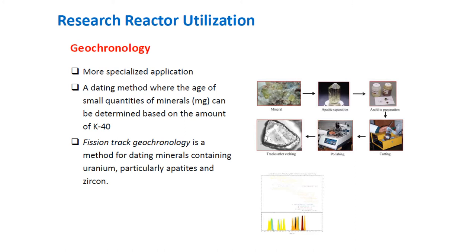The use of research reactors for geochronology is a more specialized application. There is a tendency towards loyalty to reactor facilities currently utilizing geochronological equipment, owing to lengthy facility calibrations. It is a dating method where the age of small quantities of minerals in milligrams can be determined based on the amount of K-40. Fission track geochronology is a method for dating minerals containing uranium, particularly apatite and zircon.